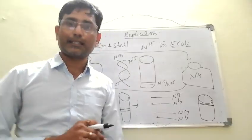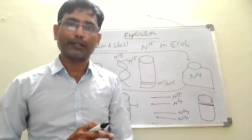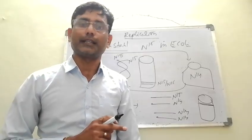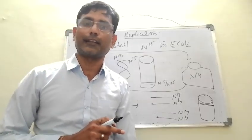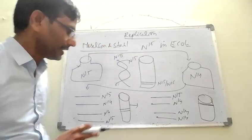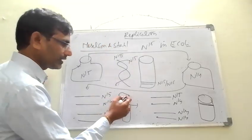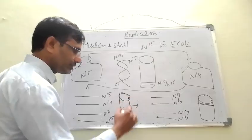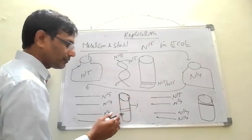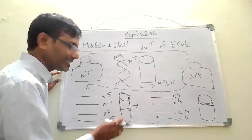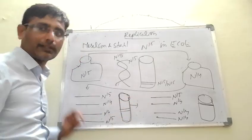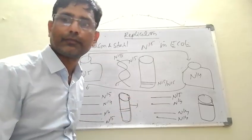These different types of DNA are separated by density gradient centrifugation. We can use cesium chloride as the ingredient in these test tubes.